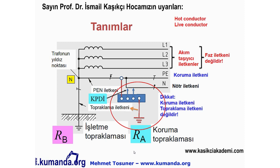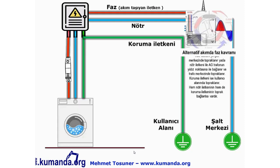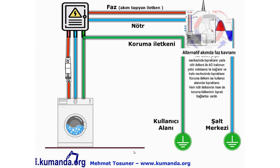Ya da eğer bir eş potansiyel barası ya da topraklama baramız varsa, bu baradan toprağa — toprağa çaktığımız kazıklara — yapılan bağlantı topraklama iletkenidir. Şebekeden faz ve nötr gelir; koruma iletkeni kullanıcı alanında yapılan topraklama bağlantısıdır. Şebekenin tipine bağlı olarak nötr iletkeni ya şant merkezinde topraklanır ya da AG trafosunun yıldız noktasına bağlanarak trafo merkezinde topraklanır. Koruma iletkeni ise kullanıcı alanında topraklanır.